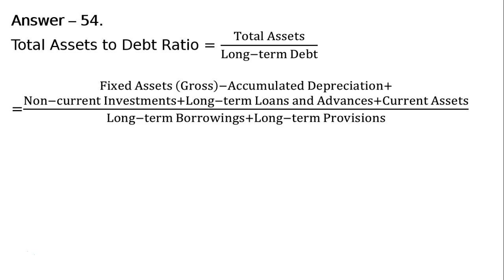Fixed assets (gross) is given. There are many items of information given. Out of that, fixed assets gross is given. Hence, accumulated depreciation is to be deducted to find out net fixed assets on the asset side. Plus non-current investments, plus long-term loans and advances given by the company to outsiders, which is an asset. Plus current assets — this gives us total assets.